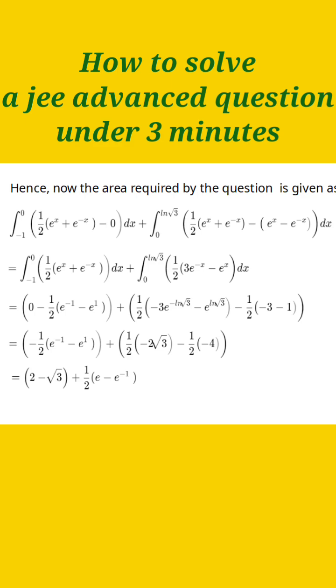You can see e to the power of ln root 3 is root 3, and e to the power of minus ln root 3 is 1 by root 3. Using these values, you come to the final answer, which is 2 minus root 3 plus half e minus e power minus 1.